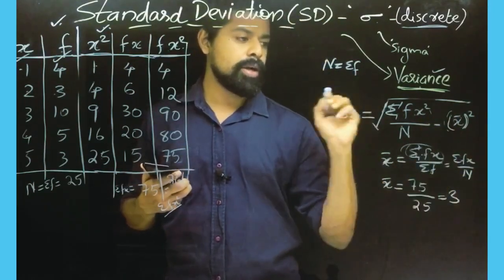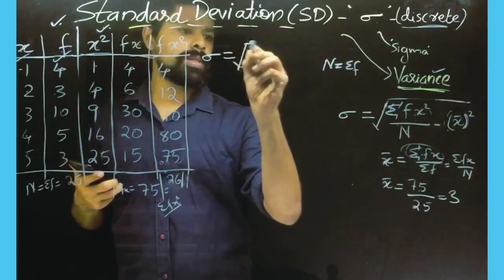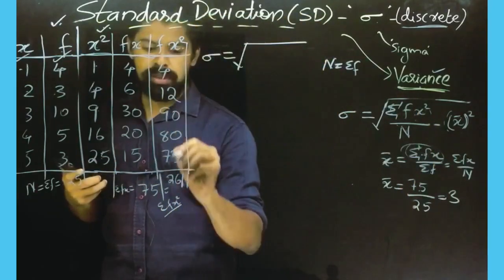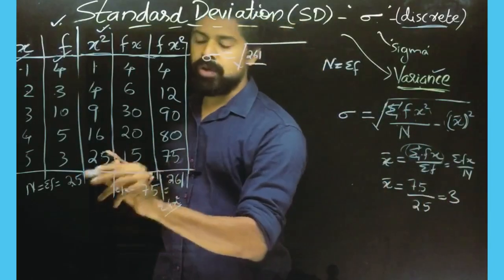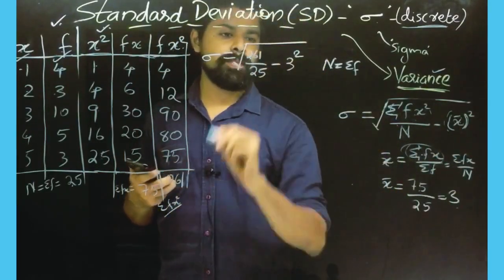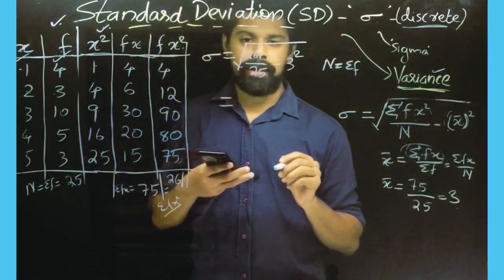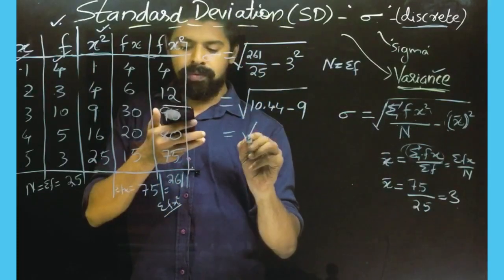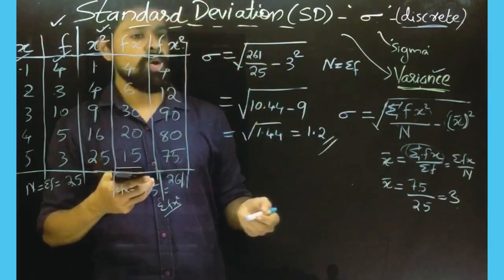Now let's do the formula. Sigma equals the square root of sigma fx² divided by n, minus x-bar squared. Sigma fx² equals 261. 261 divided by 25 is 10.44, minus x-bar squared: 3 squared is 9. So we get the square root of 10.44 minus 9, which equals the square root of 1.44, which equals 1.2.